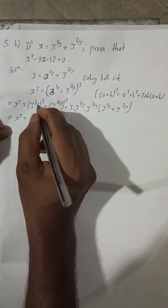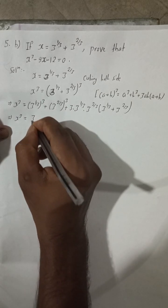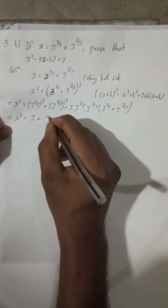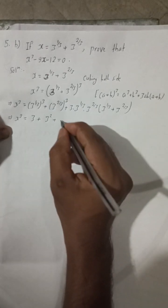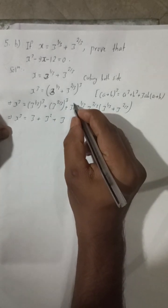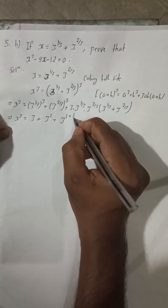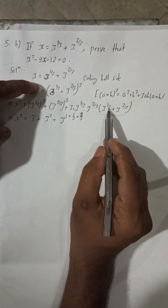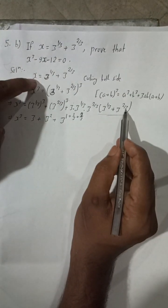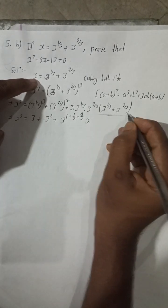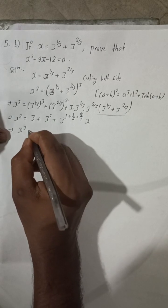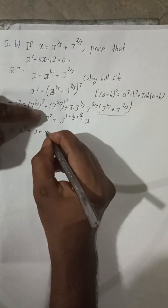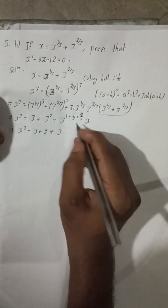Now simplifying: 3 to the power 1 by 3 whole cube — the cube and 1 by 3 cancel — giving 3. Plus 3 to the power 2 by 3 whole cube gives 3 squared, which is 9. For the 3ab part, the powers add: 1 by 3 plus 2 by 3 equals 1, so 3 to the power 1, which is 3. And the bracket a plus b is just x.